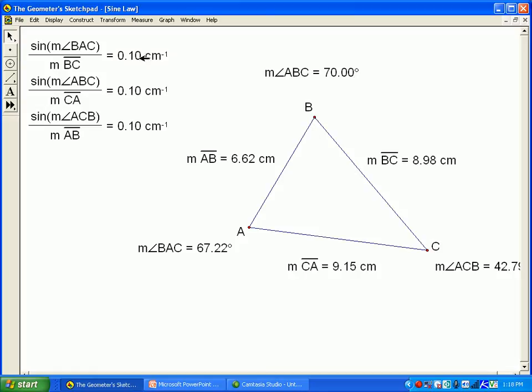I've measured and calculated the sine of each angle divided by its opposite side. For example, angle BAC is this angle, so we take the sine of 67.22 and divide it by 8.98, that's the 0.10.